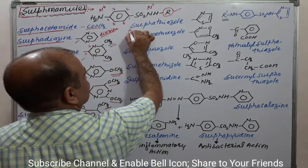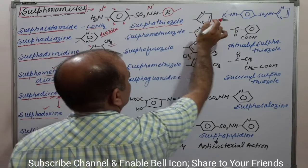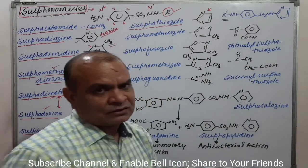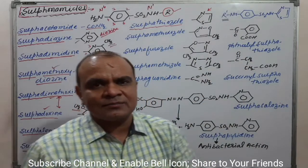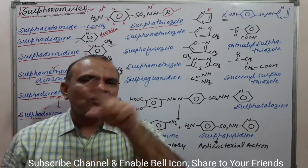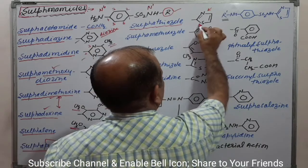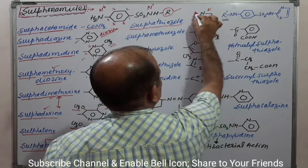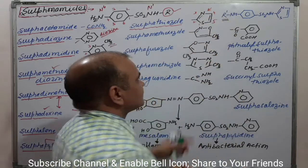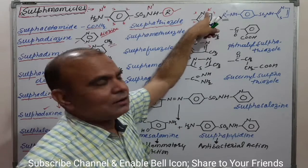Next is sulphathiazole, which contains the thiazole ring system. Thiazole is a 5-membered ring: 'thia' means sulfur, 'aza' means nitrogen, and 'ole' indicates 5-membered. In thiazole, sulfur is at position 1 and nitrogen is at position 3 — giving a 5-membered ring with both sulfur and nitrogen.